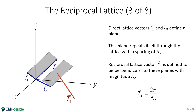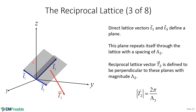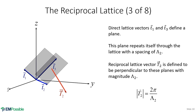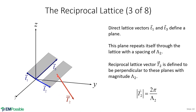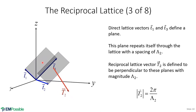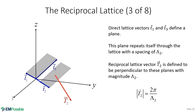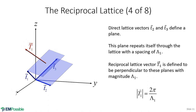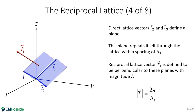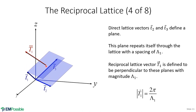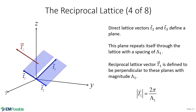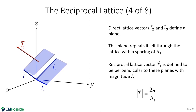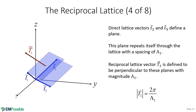Next we pick translation vectors T1 and T3. Those two vectors define a plane that repeats itself, and we define a second vector perpendicular to those planes with magnitude 2π divided by the spacing — giving us our second reciprocal lattice vector. Finally, we use T2 and T3, which define a plane that repeats itself, and define a third vector perpendicular to those planes with magnitude 2π divided by the spacing, giving us our third reciprocal lattice vector.